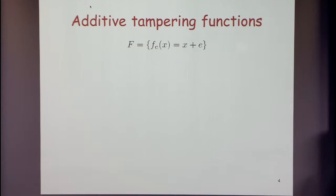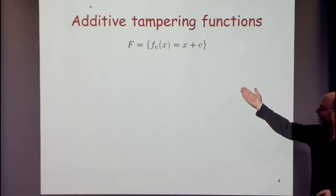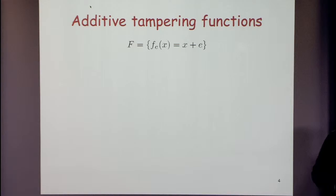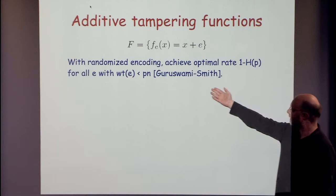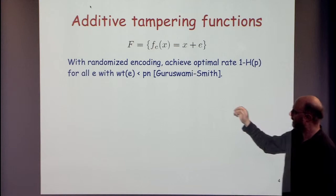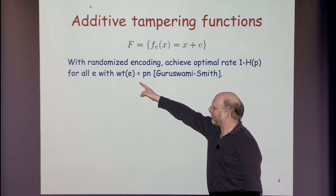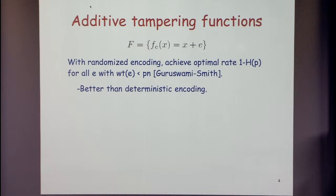One of the most natural families is the additive tampering function family: for each error vector e, we define f(x) = x + e. With randomized encoding, Guruswami and Smith showed that you can achieve capacity in the worst-case setting, allowing any error vector with weight less than ρn. This is better than what's possible with deterministic encoding in this worst-case model.